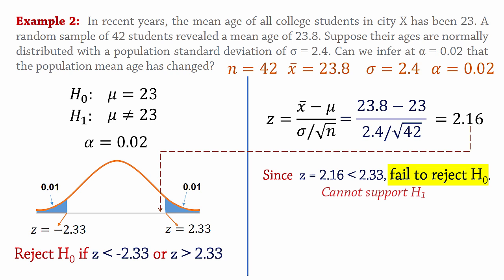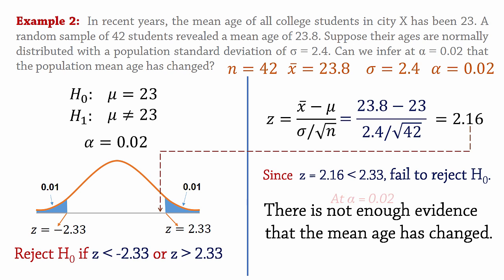Consequently, we cannot support the alternative. Therefore, at alpha equals 0.02, there is not enough evidence to infer that the mean age has changed. And that concludes this tutorial. Thanks for watching.